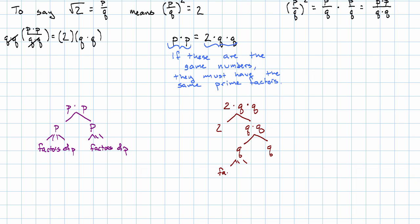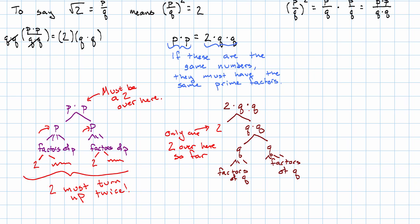And then we have the factors of q and the factors of q again. The key thing to notice is, over here, we have a 2 among the factors, which means there must be a 2 among the factors over here. The only place that the 2 could be, it must be one of the factors of p. At some point when we're factoring p, we must get 2 times some other stuff. But if 2 is a factor of this p, it must also be a factor of this p. It turns out that 2 has to turn up twice. But we only have one 2 among the factors of 2 times q times q so far. There must be another one.